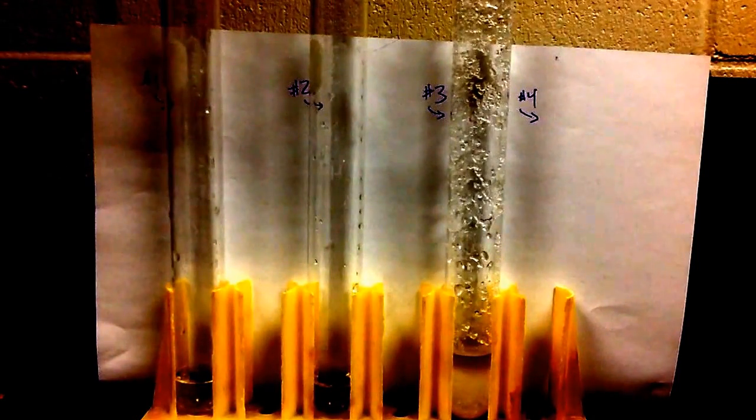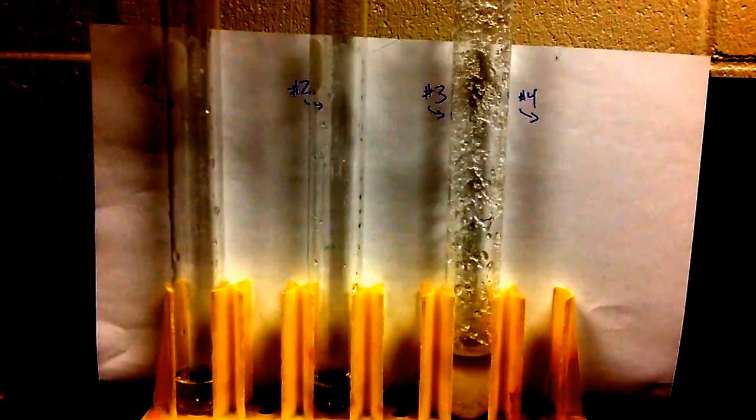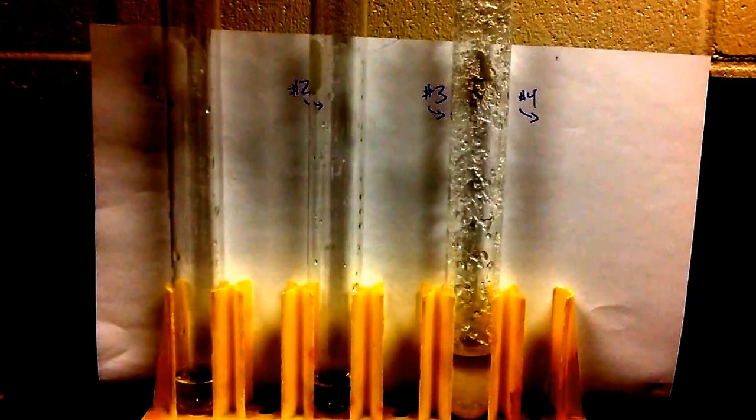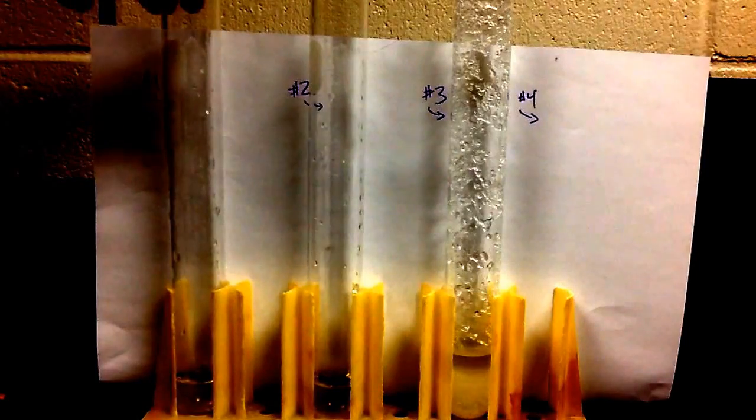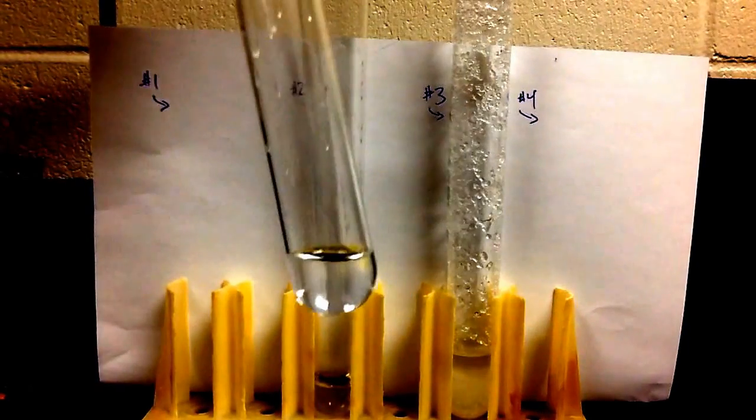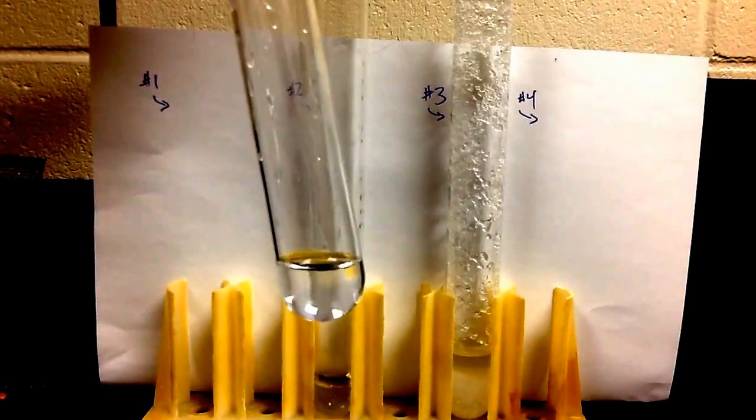So what we're going to do is talk about the three different things we've done in our lab, and then explore our fourth one. First thing we did is in our first test tube, we added five milliliters of water, and that was all the water we were going to add for our lab.